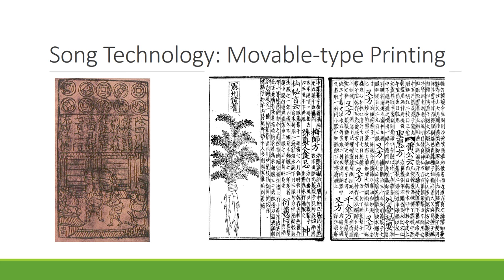The Song are most famous for their technology. One major innovation is movable type printing — a system using individual stamps, one for each Chinese character, that can be rearranged to create paragraphs and books and produce multiple copies quickly. This also enabled them to print the first paper money, which was economically significant because it meant you didn't need to use gold, silver, or copper — you could simply create currency.